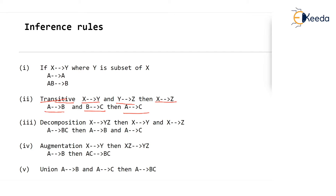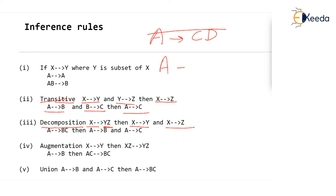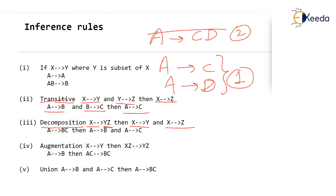What about decomposition? If X determines Y, Z, then X determines Y and X determines Z. So if A determines CD, then instead of writing this one FD you can also write A determines C and A determines D. Both are equivalent — you can decompose the right-hand side and write two different FDs.